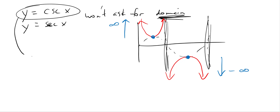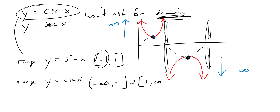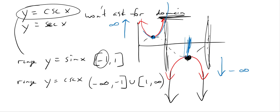Let's concentrate on cosecant. The range for y = sin(x) is from −1 to 1. Since cosecant is the reciprocal, the range for y = csc(x) is going to be negative infinity to −1, bracket — because it includes that point — union, and then starting at 1 going to positive infinity. The sine graph is small, just from −1 to 1, but the cosecant graph goes all the way to negative infinity down to −1, skips the middle part, then starts back at 1 and goes to positive infinity.